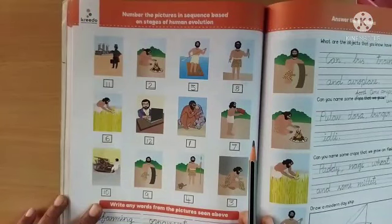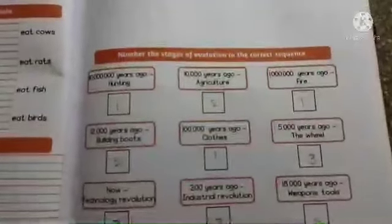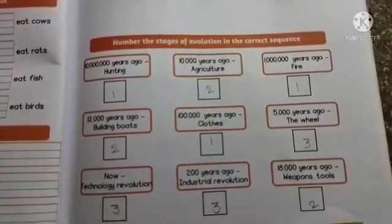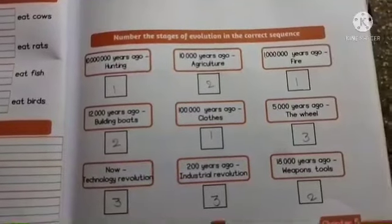After that, we have an activity to write any words from the pictures given above. In the cognitive practice book, we have an assignment to draw and color two objects that have wheels in the space provided. After that, we have an activity to number the stages of evolution in the correct sequence.